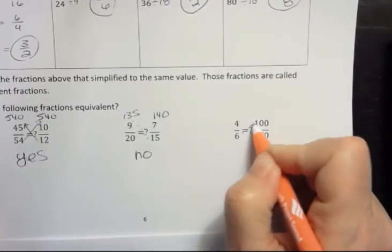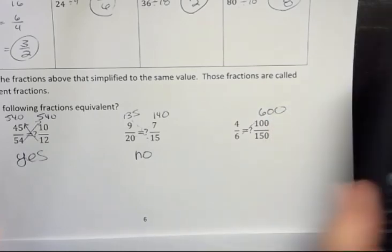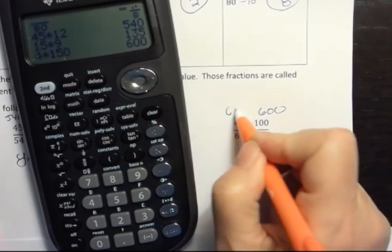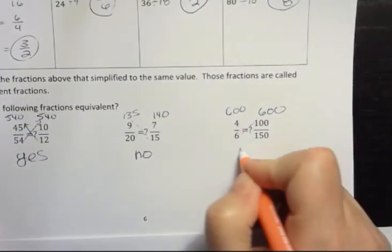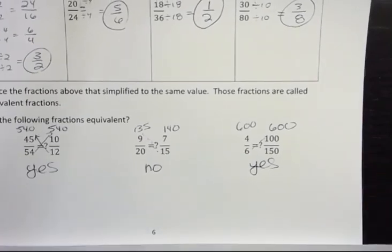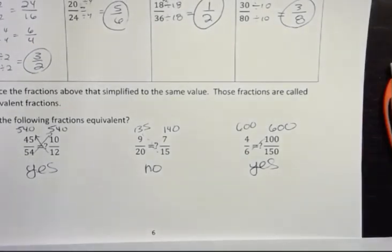And what about this? 6 times 100 is 600. And 4 times 150, also 600. So yes, these are equivalent. So you can reduce them to lowest terms and compare, or you can cross multiply to compare. All right, have a great day.